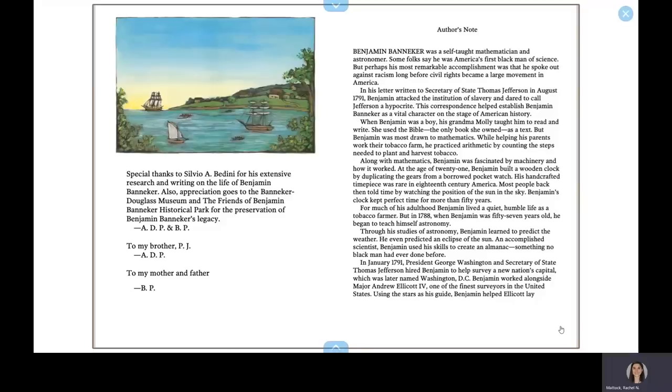Along with mathematics, Benjamin was fascinated by machinery and how it worked. At the age of 21, Benjamin built a wooden clock by duplicating the gears from a borrowed pocket watch. His handcrafted timepiece was rare in 18th century America. Most people back then told time by watching the position of the sun in the sky. Benjamin's clock kept perfect time for more than 50 years.